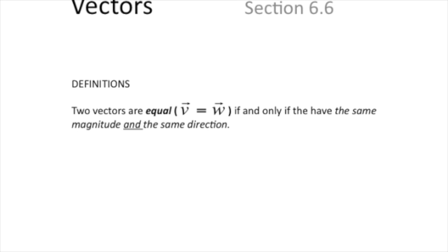Two vectors are equal if and only if two things are true: they have the same magnitude and the same direction. They don't have to be in the same place.